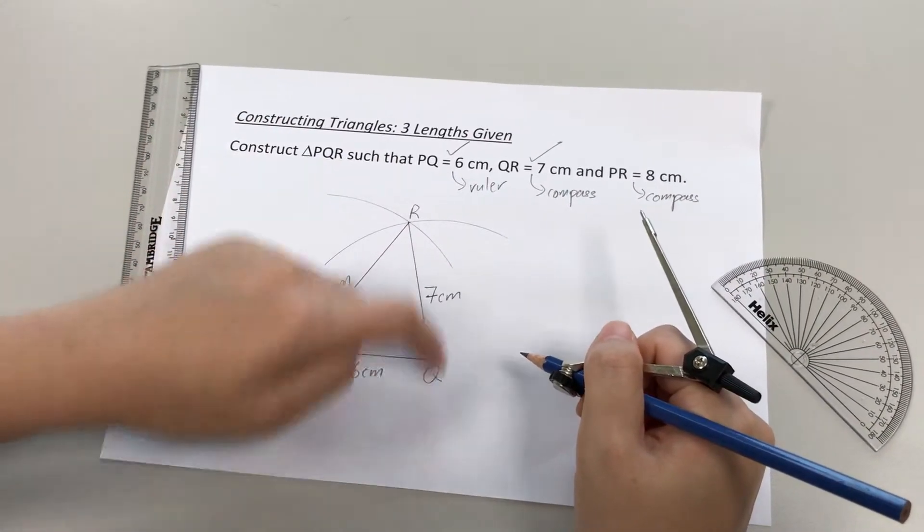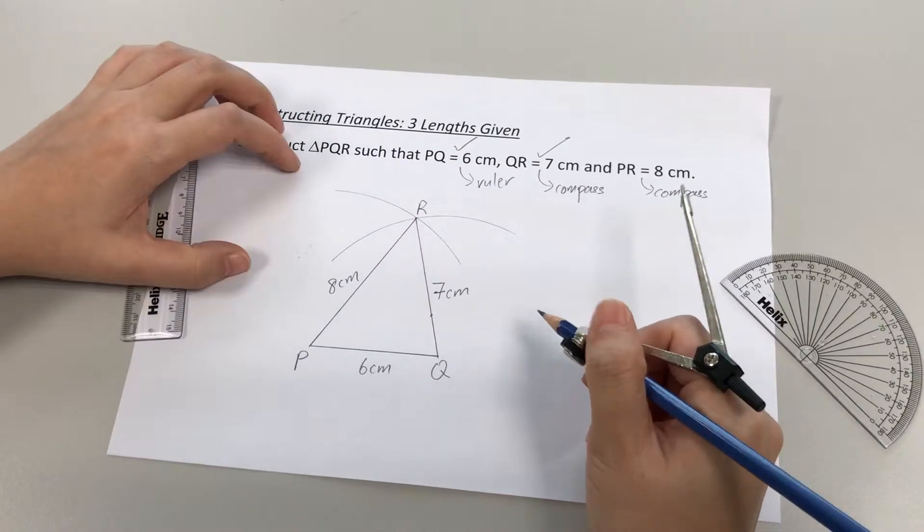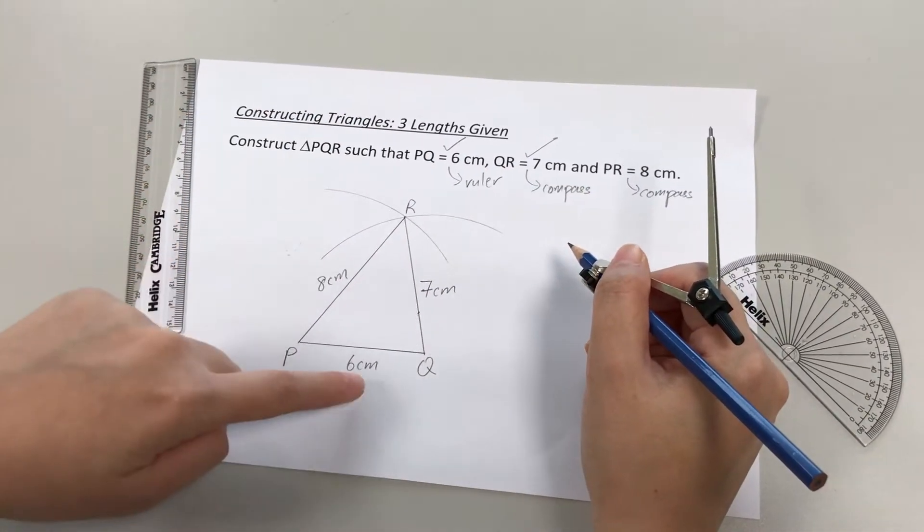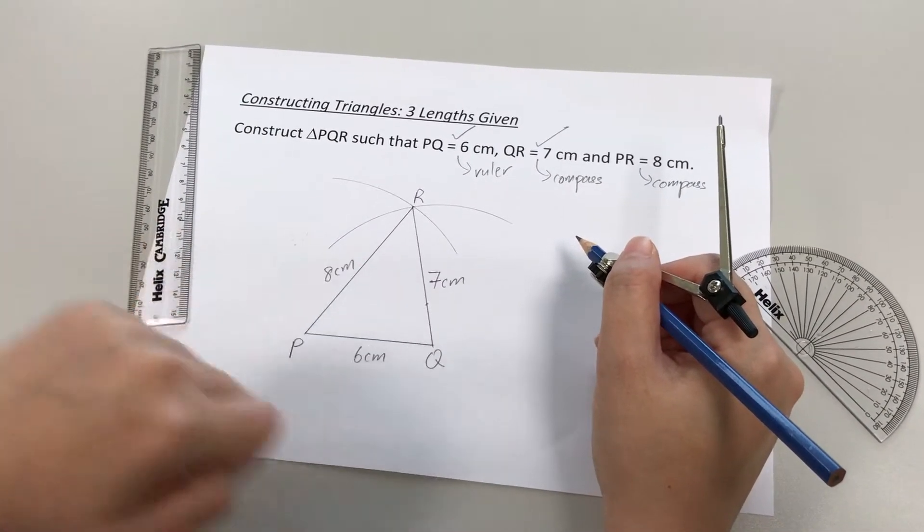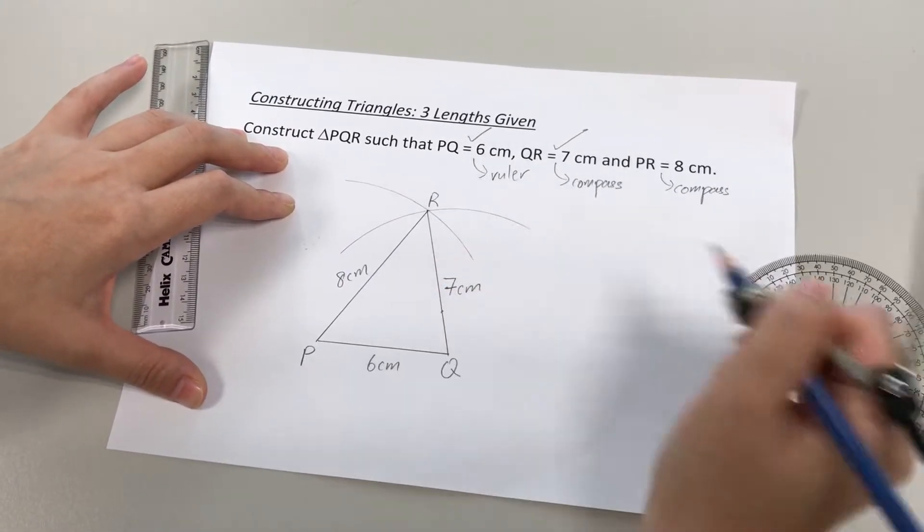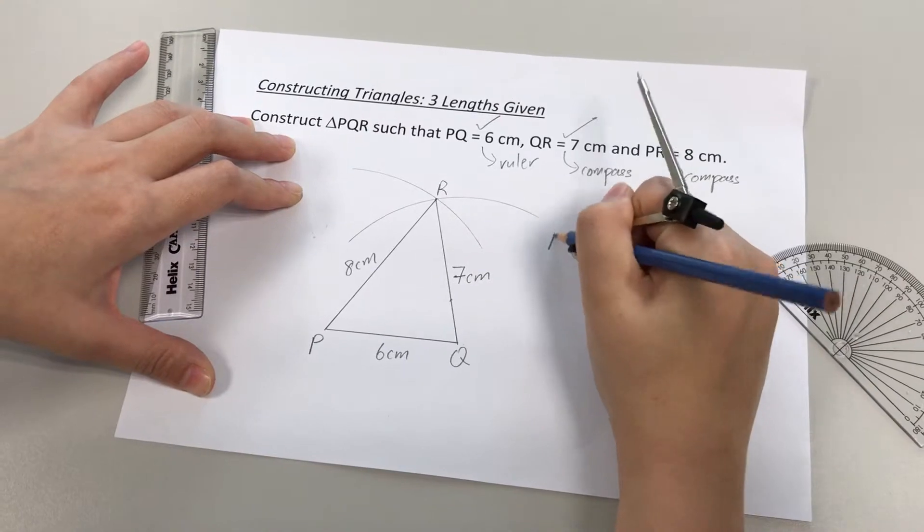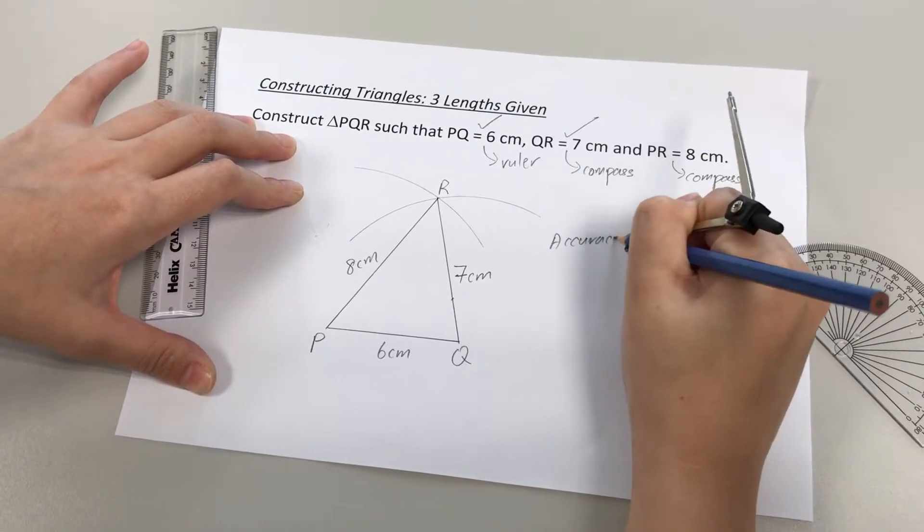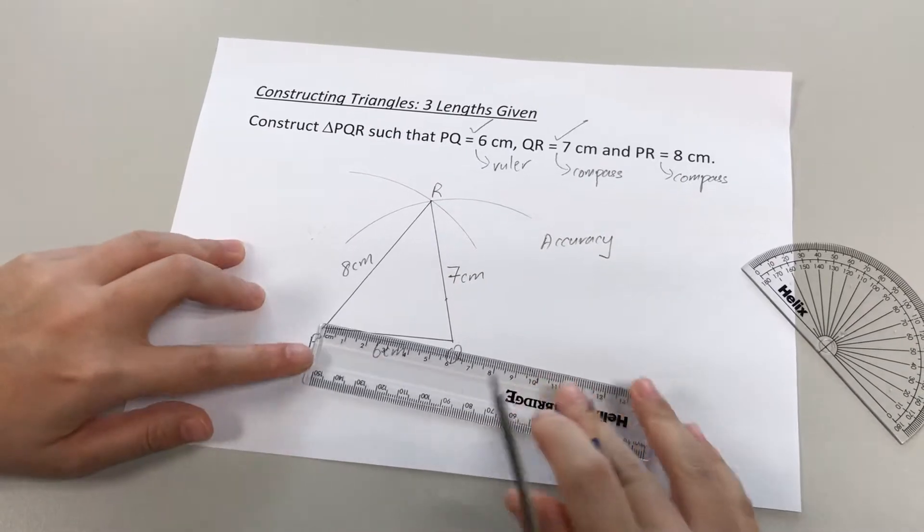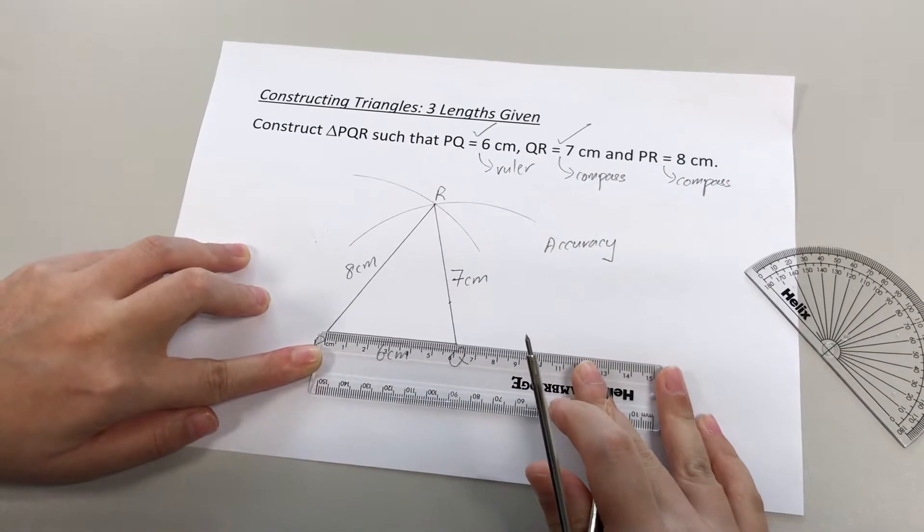All right, so all the three points of the triangle must be labeled. As well as all the three information given, which in this case are the three lengths, 6, 7, and 8 cm, they have to be labeled. Okay, because when the teacher marks your work, we are marking for accuracy, which means to say the lengths are correct. So you can actually do a quick check.